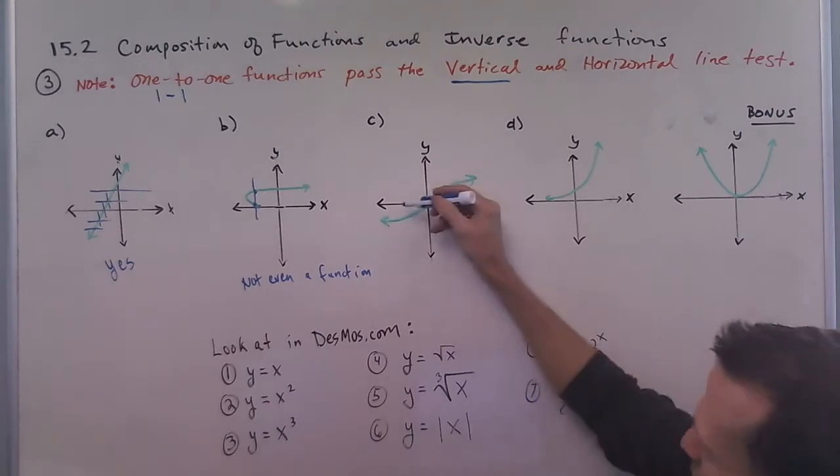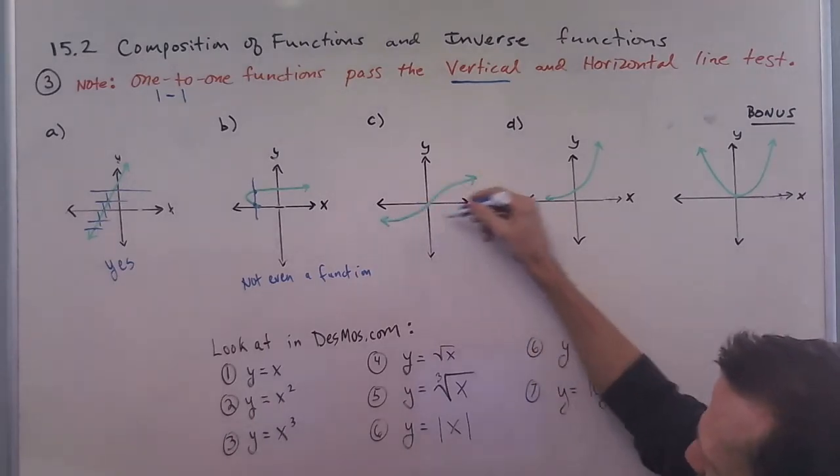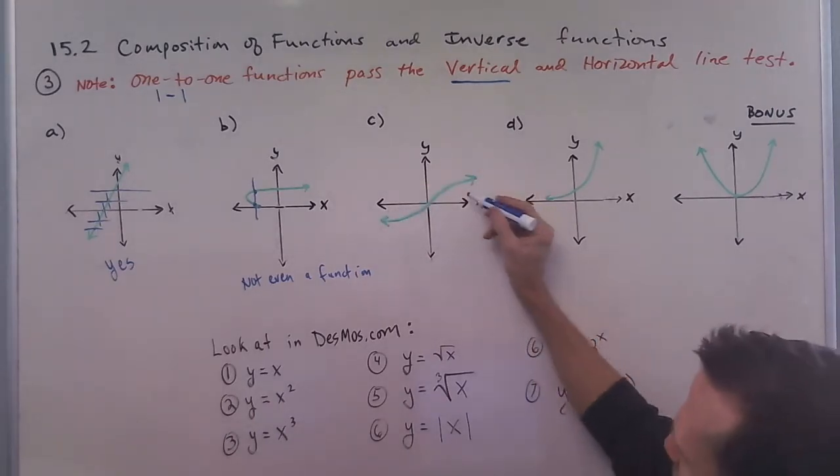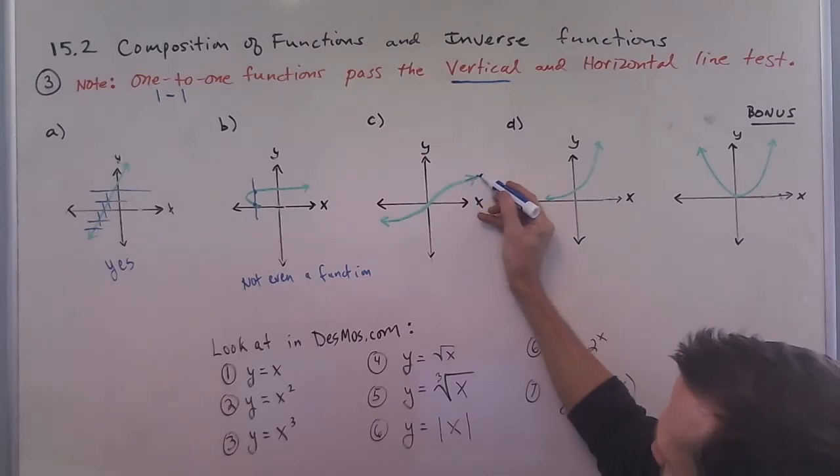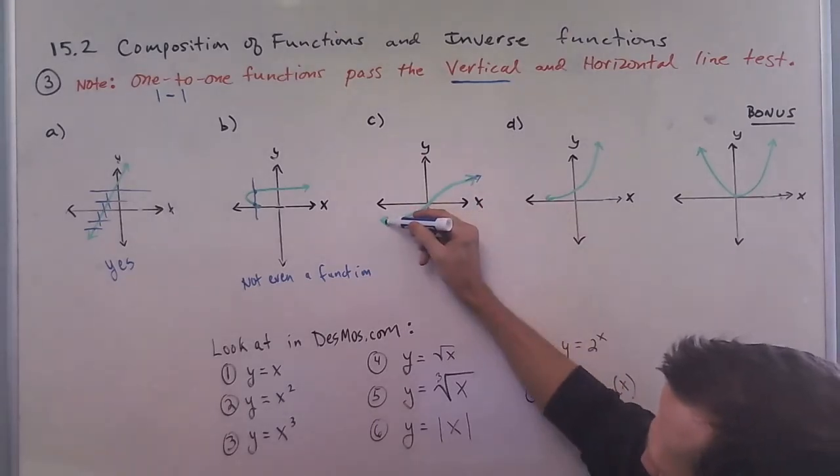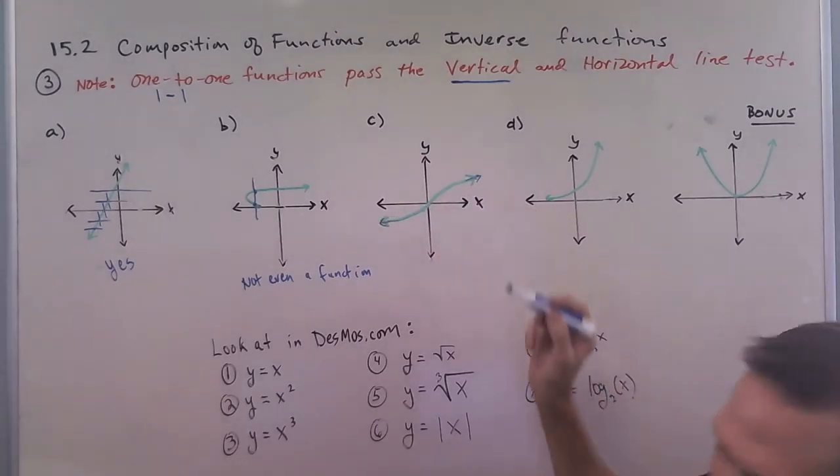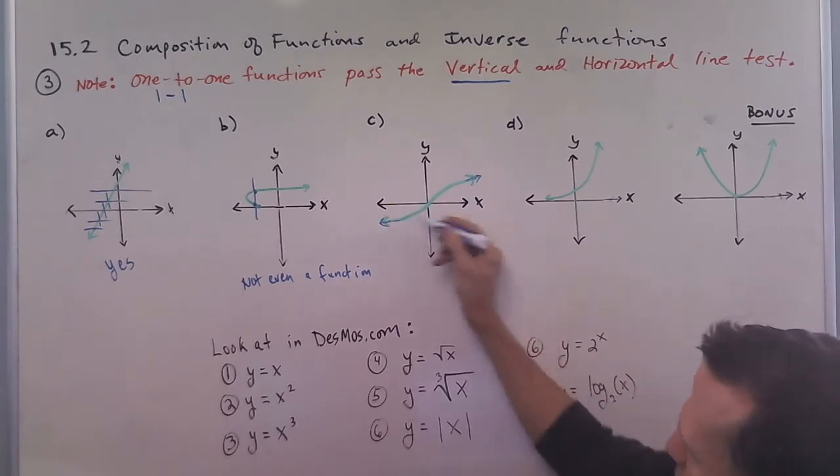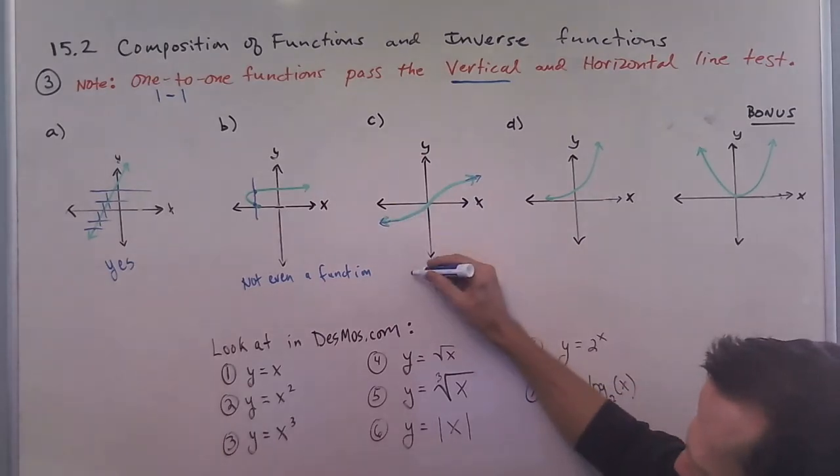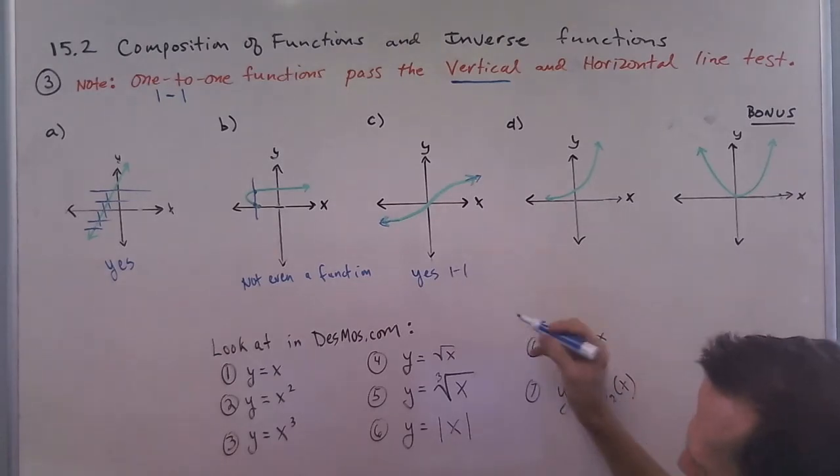This one here will pass the vertical line test and it's also going to pass the horizontal line test. This continues to go up forever and this should look like it goes down forever. So it will pass the horizontal and the vertical line test. So yes, it's one-to-one.